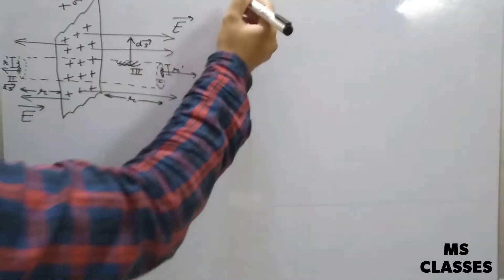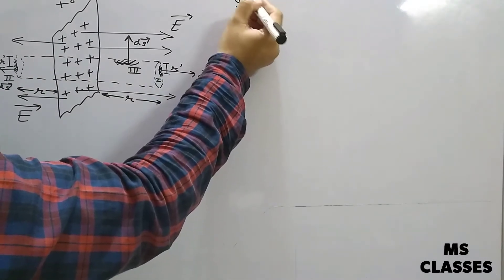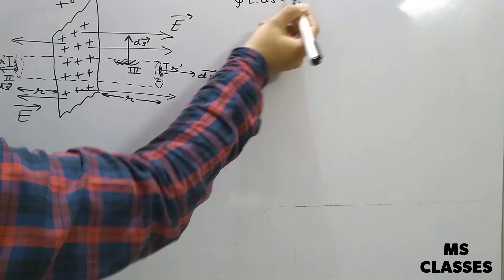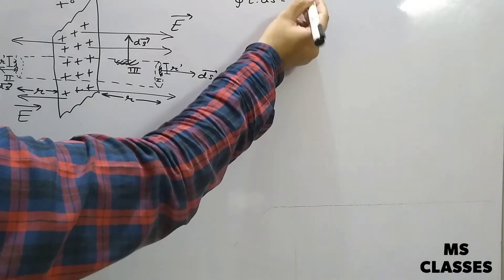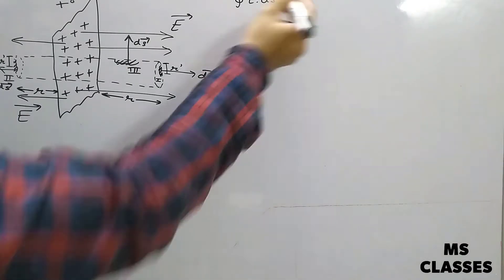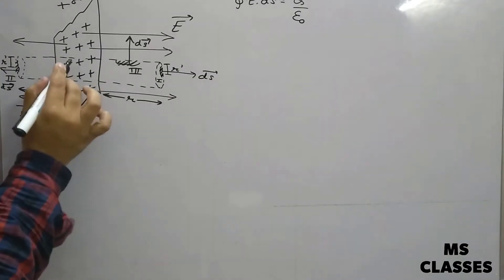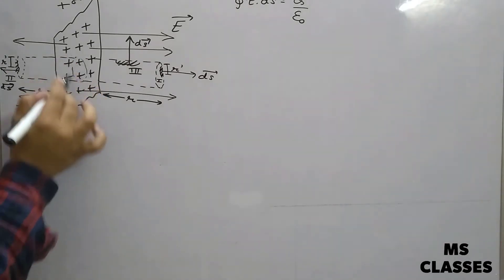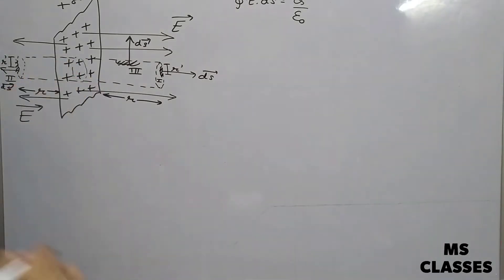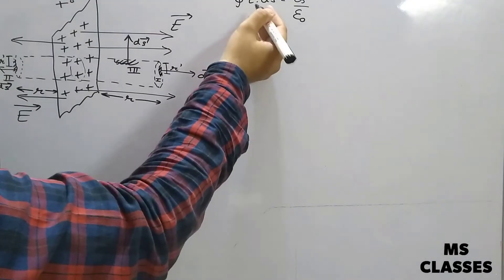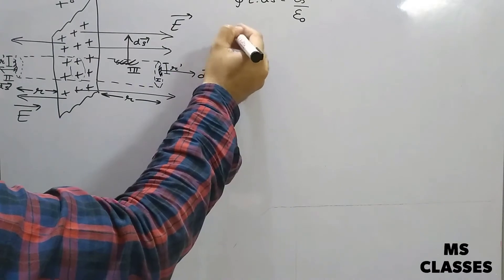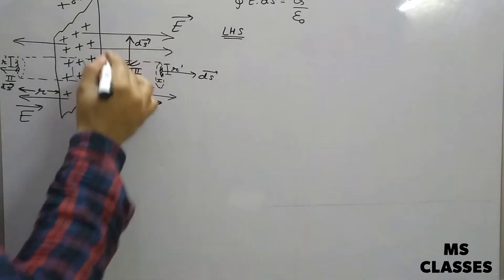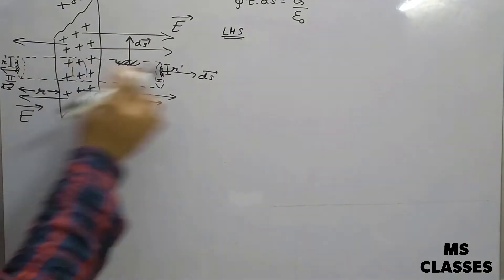As per Gauss's theorem, as we know, the closed integral of E dot ds equals q' by epsilon naught, where q' is the total charge enclosed. So first of all, we will solve the left-hand side and find out the total flux for all three cases.